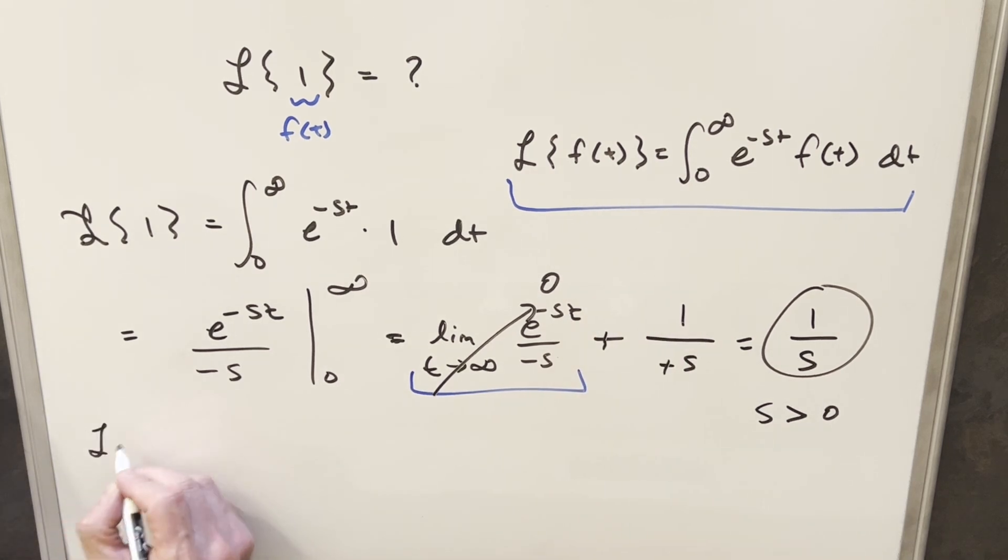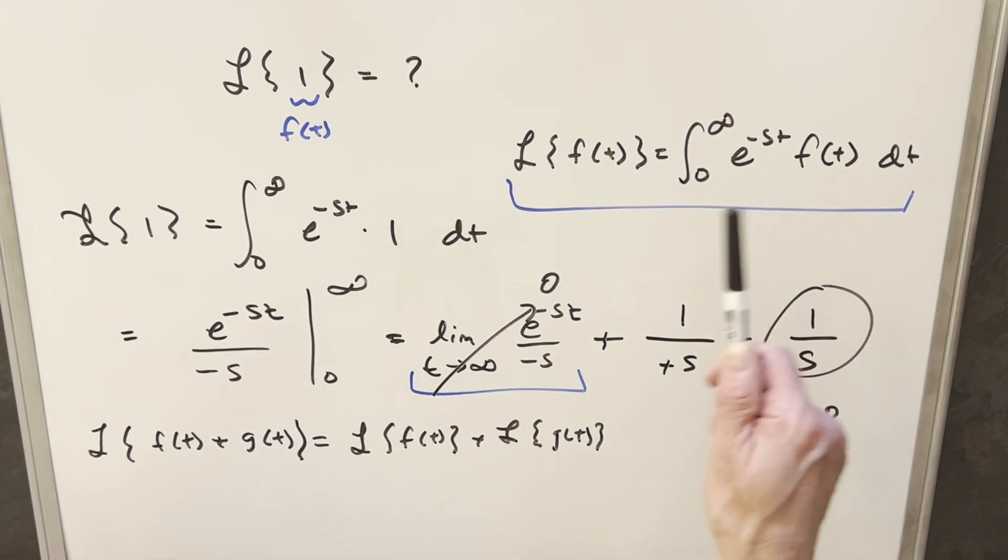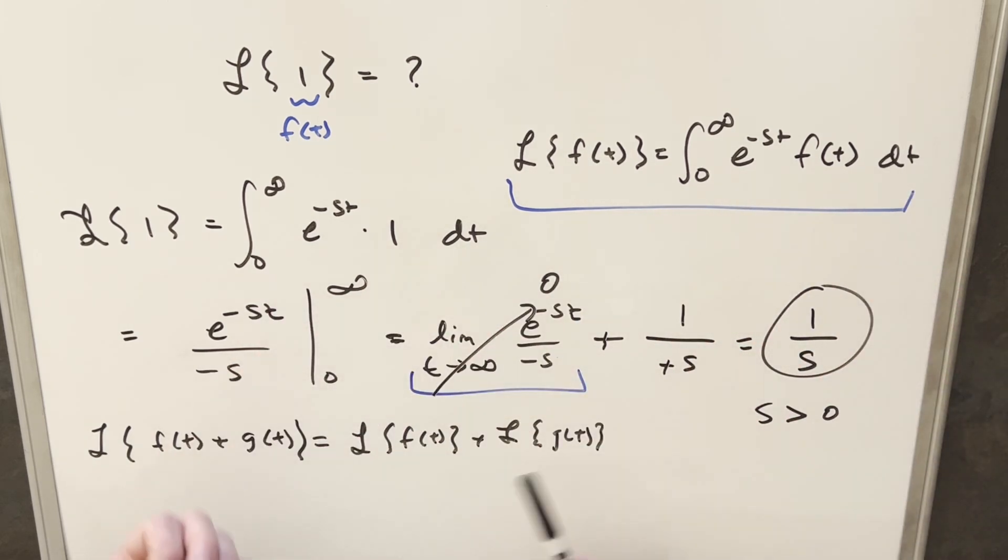Another really quick example of this is if you have some addition going on inside the Laplace transform, like if you have Laplace of f(t) plus g(t), and this will work for plus or minus, of course. Well, you could break this up as the Laplace of f(t) plus the Laplace of g(t). And this would be really easy to show, just picture if you plugged f(t) plus g(t) in here, well, then you have addition, you could split an integral. So if you can split the integral on addition or subtraction, then you can do the same thing for a Laplace transform.